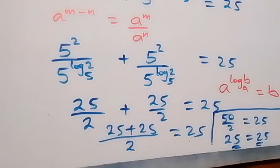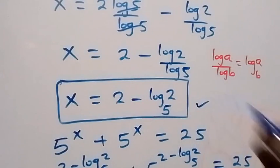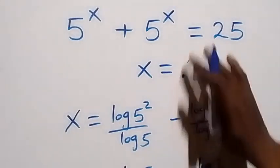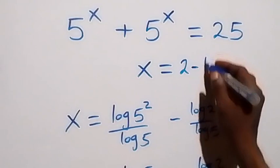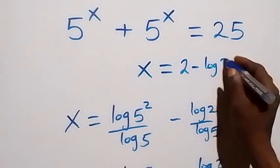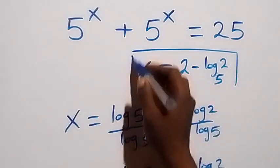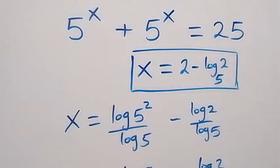Hence we conclude that x equals 2 minus log 2 base 5 satisfies the given problem, and the solution is x equals 2 minus log 2 base 5. Thank you for watching — don't forget to subscribe to my channel and turn the notification bell on.